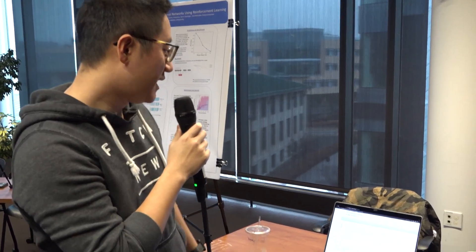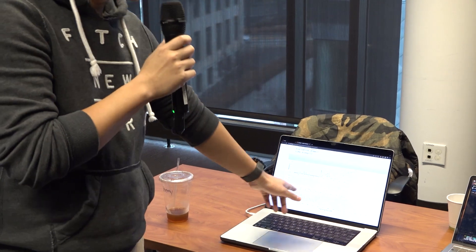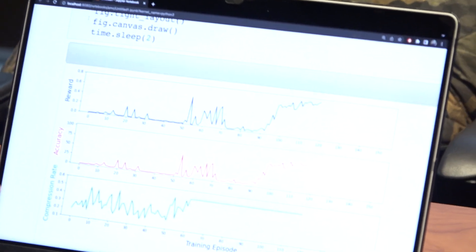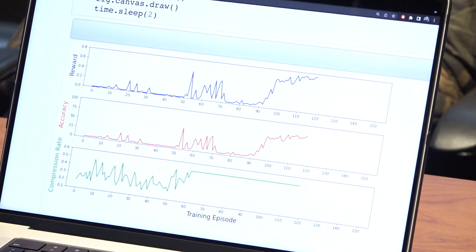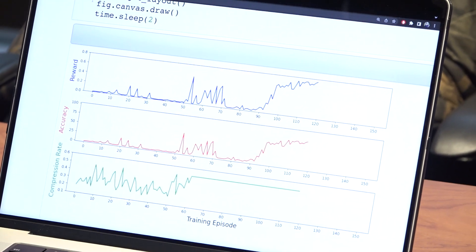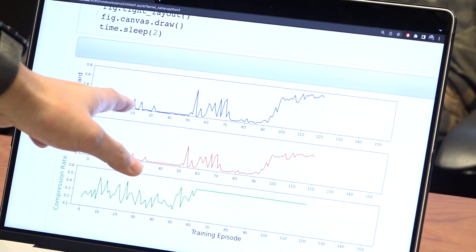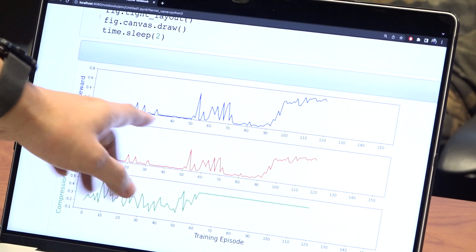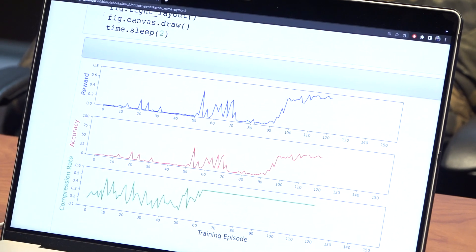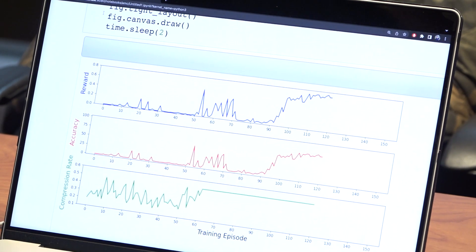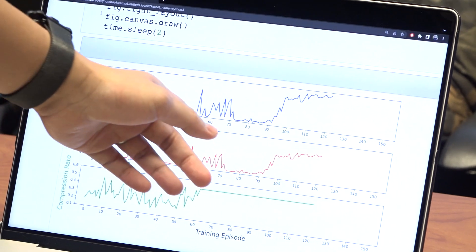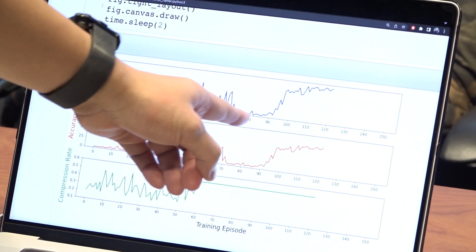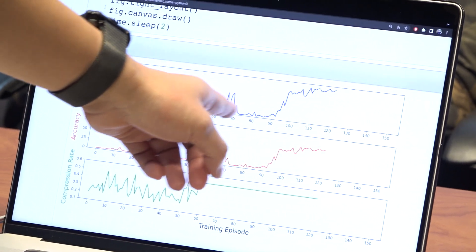This is the demo of our proposed method. What you can see here is the real-time reporting of our metrics over the training episodes of the reinforcement learning framework. In the first one, the blue one, is the reward that we have. For the first 50 training episodes it's collecting experience into the replay buffer, and after 50 training episodes you can see the reward is going up a lot and is much more stable.